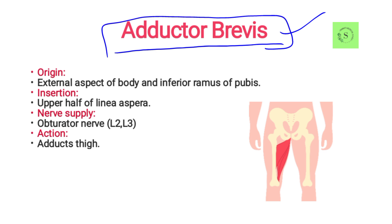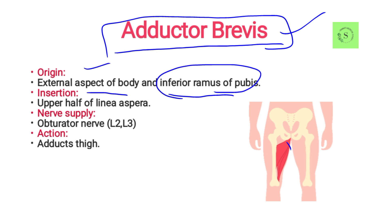Its origin is the external aspect of the body and the inferior ramus of the pubis — it is attached to the inferior ramus of the pubis. It is inserted into the upper half of the linea aspera, which is present on the femur.